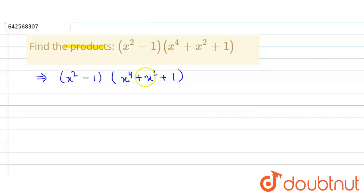We use an identity to solve the product. This equals x squared minus 1, and here it can be written as x squared whole squared plus x squared plus 1.